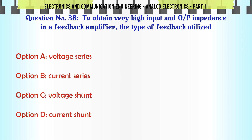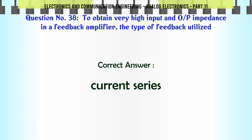To obtain very high input impedance in a feedback amplifier, the type of feedback utilized. A. Voltage series. B. Current series. C. Voltage shunt. D. Current shunt. The correct answer is: Current series.